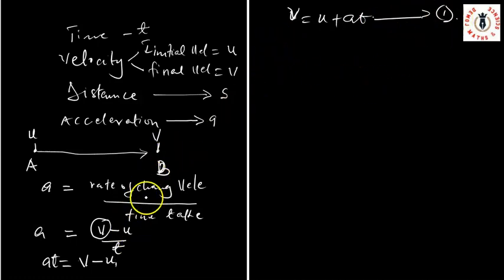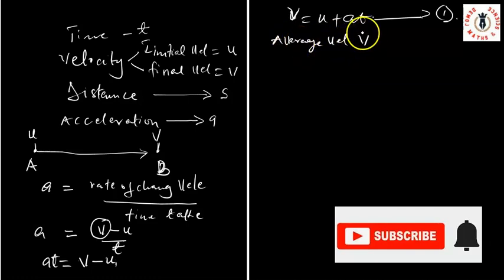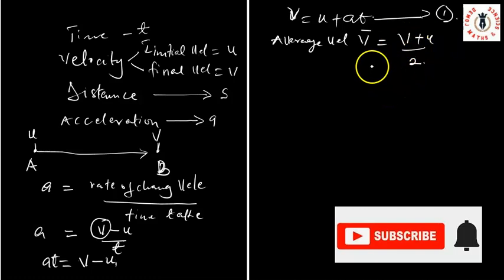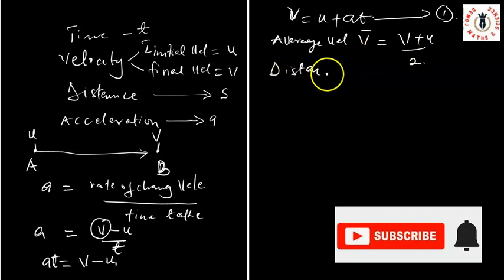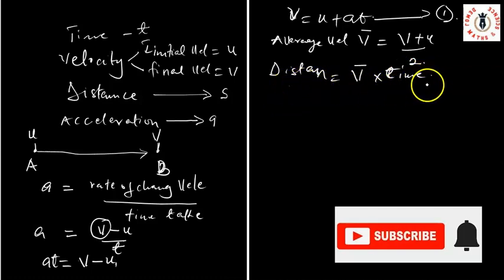Now, remember that A = (V − U) / T. Also, the average velocity covered overall — the average velocity, let's call that V-bar — is given as (V + U) / 2. If average velocity is given as (V + U) / 2, then the distance covered is given as average velocity times T.